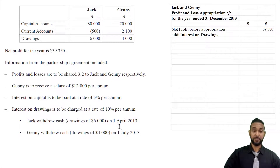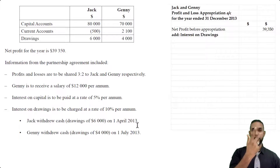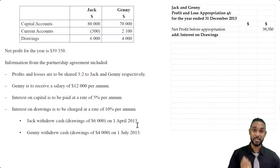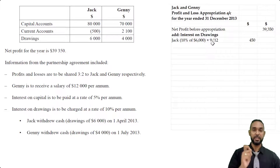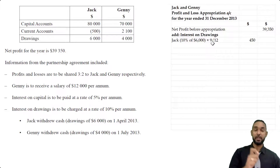Jack took out his drawings on the 1st of April 2013. If the year ended 31st December 2013, that means the drawings have only been outstanding for April, May, June, July, August, September, October, November, December — nine months. They weren't outstanding for the entire year. Therefore we cannot charge a full 10% interest, because interest rates, unless otherwise stated, are always per annum. So the calculation is 10% × 6,000 × 9/12, because the drawings were only taken for nine out of twelve months.